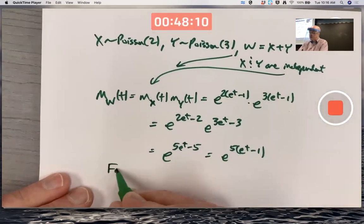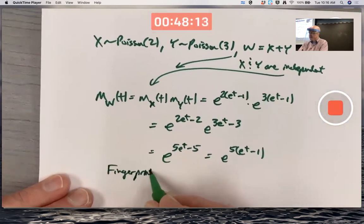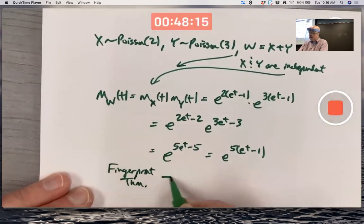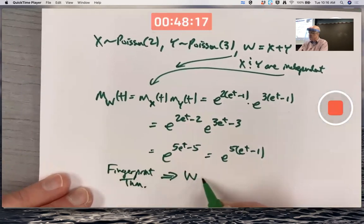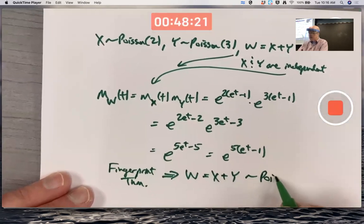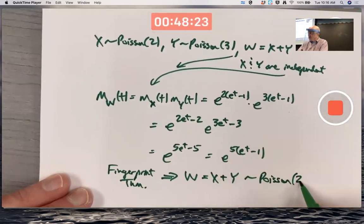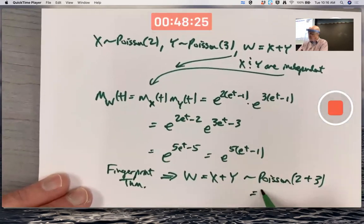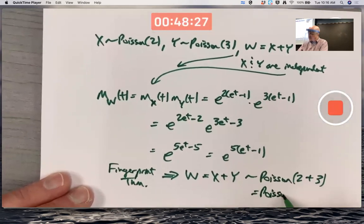Fingerprint theorem now implies that W, which is the sum, is Poisson with mean 2 plus 3. In other words, Poisson with mean 5.